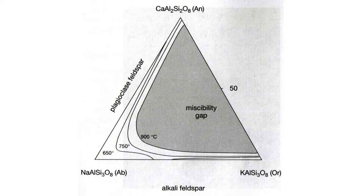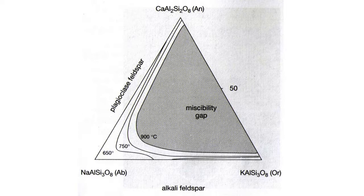Compositions between albite and orthoclase are called alkali Feldspar or K-Feldspar. Notice that the region in the middle of the triangle is not named. This is because at high temperature, Feldspar shows a complete solution series, but at lower temperature these Feldspar are not stable as a solution and unmix to form corresponding plagioclase and alkali Feldspar. The region in the triangle where the mineral is not stable for the given temperature and pressure is called the miscibility gap, shown here in dark. This gap is different for different temperatures and pressures.